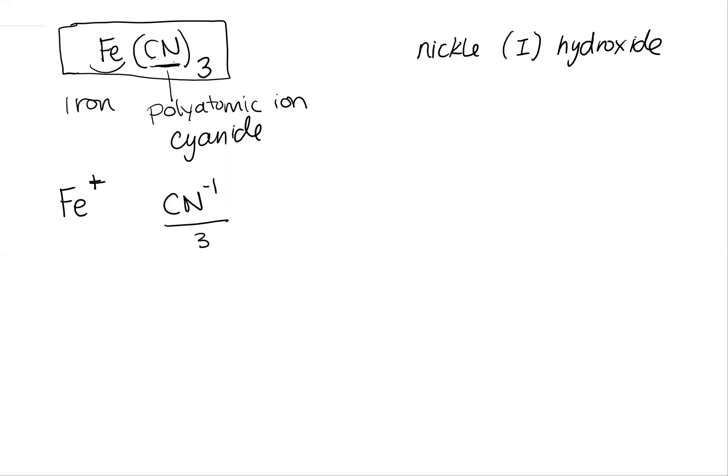But since I had three of these, think of this as a reverse crisscross rule and make that a plus three. So my iron has a plus three charge.